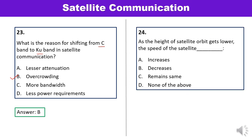Question 24: As the height of satellite orbit gets lower, the speed of the satellite? The formula for satellite velocity is v = √(GM/R). Since velocity is proportional to 1/√R, if R decreases (lower orbit height), velocity increases. Answer A is correct.